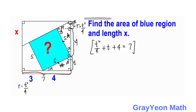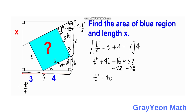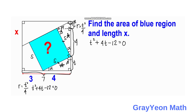If we multiply through by 4, we get t squared plus 4t plus 16 equals 28. Subtracting 28 from both sides gives us t squared plus 4t minus 12 equals 0. We solve this resulting quadratic equation by factoring.